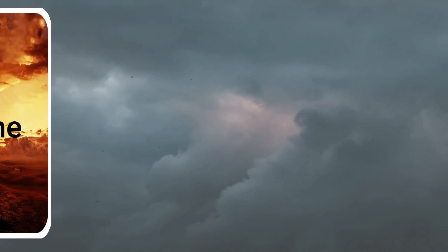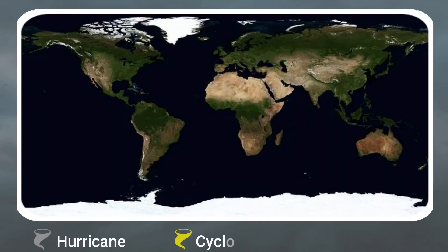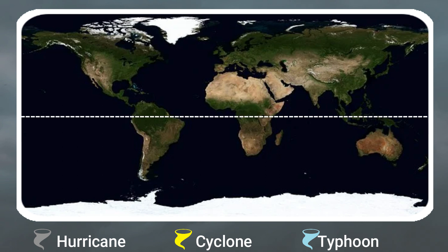Cyclones are also known as hurricanes and typhoons. Actually, there are no differences between these — they are all exactly the same weather system, with causes of strong wind, heavy rain, storm surges, and all have an eye in the center. The name differs according to the region. Hurricanes occur near the equator over warm ocean water in the Atlantic basin, Atlantic Ocean, Caribbean Sea, the Gulf of Mexico, the eastern north Pacific Ocean, and less frequently the central north Pacific Ocean, near Cuba, the United States and Mexico.